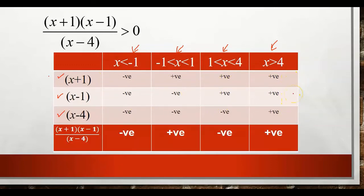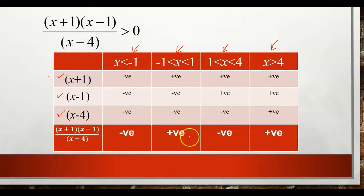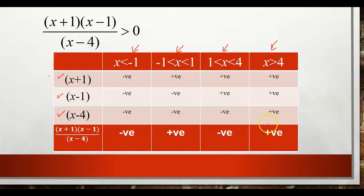Now we compute the sign of the full operation (x+1)(x−1)/(x−4) for each interval. For the first interval: negative times negative divided by negative — negative times negative gives positive, positive divided by negative gives negative. For the second interval: positive times negative gives negative, negative divided by negative gives positive. For the third interval: positive times positive divided by negative gives negative. For the last interval: all positive, giving positive.